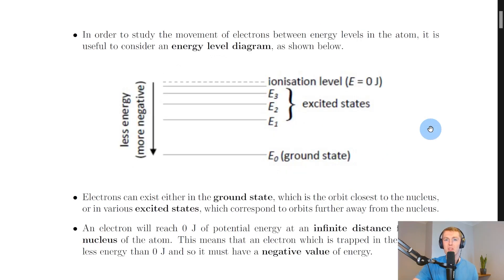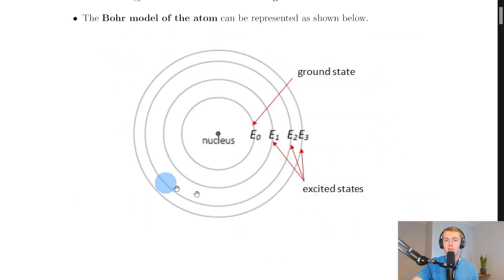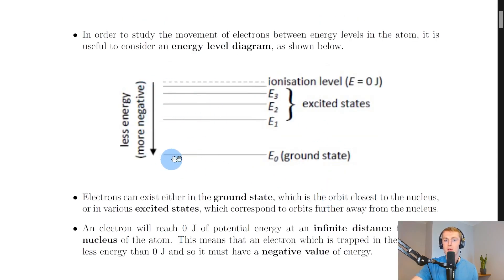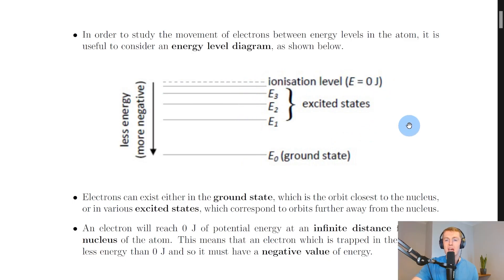We can take our diagram of the Bohr model with circular orbits and change it into an easier form to see how electrons move between energy levels by using straight lines instead of circular orbits. This gives us what we call an energy level diagram. Here we've got our ground state E0 at the bottom, excited states E1, E2, and E3 above it, and then a dashed line showing the ionization level where the energy equals zero joules. Because we define the ionization level at zero joules, all smaller energy levels must be below zero — i.e., negative values of energy.